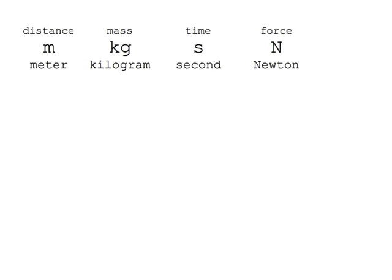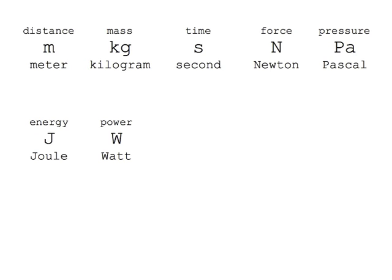To measure force, we commonly use multiples of the Newton, abbreviated by an uppercase N. To measure pressure, we use multiples of the Pascal, abbreviated by a lowercase p. To measure energy, we commonly use multiples of the joule, abbreviated by an uppercase J. To measure power, we commonly use the watt, abbreviated by an uppercase W. To measure resistance, we commonly use the ohm, abbreviated by an uppercase Greek letter omega.